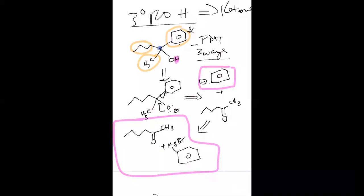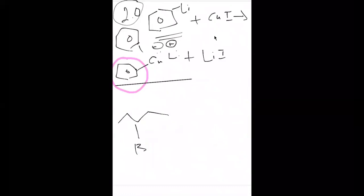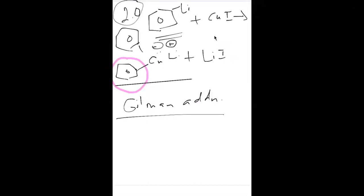So in the example, when it says one of the lithiums will be used — only one, yeah. It's not the lithium — it's actually whatever is attached to copper. So let's take this Gilman reagent and add it to an alkyl halide. We're going to do a substitution.